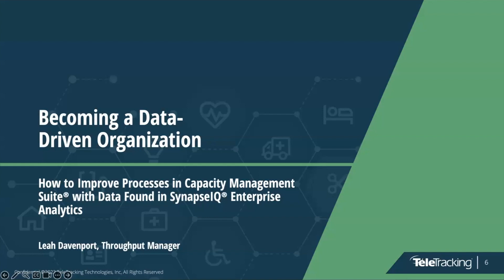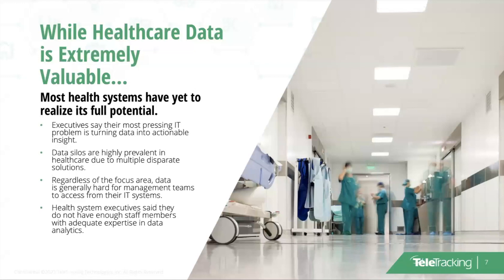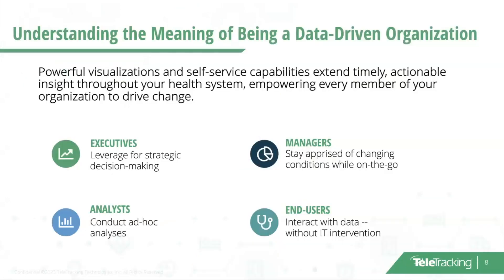Before we dive in, we first want to give a little background into Synapse IQ. At Teletracking, we speak to health systems every day about how to drive change in their organization, and a common challenge we hear is that there is data available to team members throughout the health system, but it isn't always strong enough to be actionable or truly able to guide decision-making when planning how to improve patient flow. A common sentiment is that having data is great, but it isn't always one-size-fits-all — different areas of the organization need different information to know where to focus their efforts. With Synapse IQ, each level of the organization is supported with structured and easily accessible data that provides insight into how their operations and processes, supported by Capacity Management Suite, are performing.